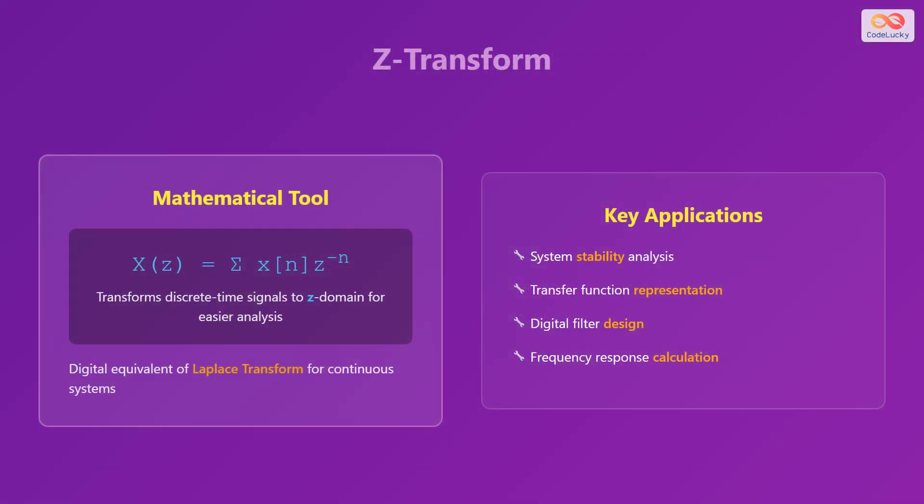The Z-transform is a mathematical tool used to transform discrete time signals into the Z-domain, which simplifies analysis. It's the digital equivalent of the Laplace transform used for continuous systems. The formula is X(z) = Σ x(n) × z^(−n). Key applications include system stability analysis, transfer function representation, digital filter design, and frequency response calculation.